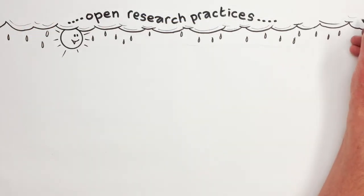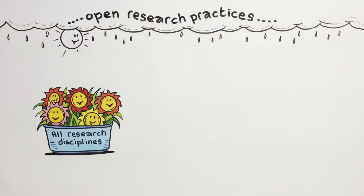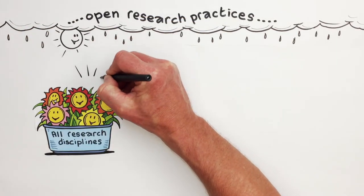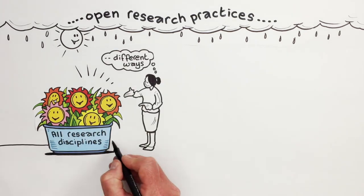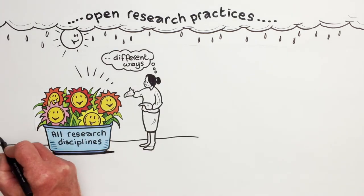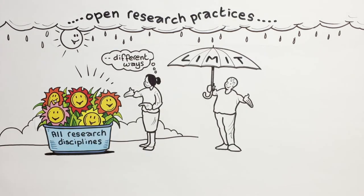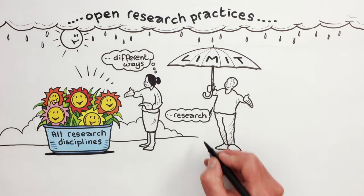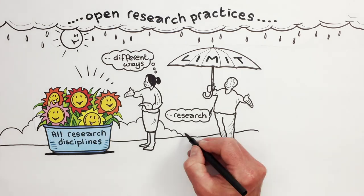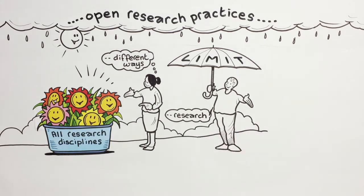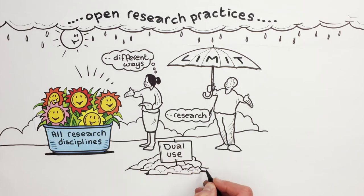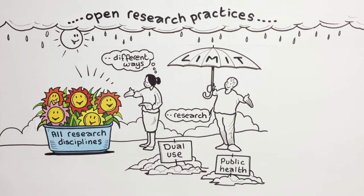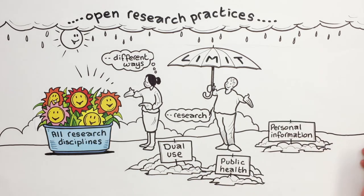Open research practices apply to all research disciplines, if in different ways. In some cases, it might be necessary to limit open research — for example, where research has dual use, when it has implications for public health, or where it might include identifying personal information about a participant.